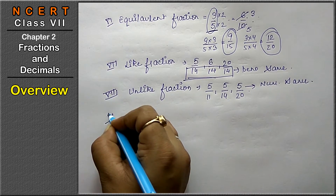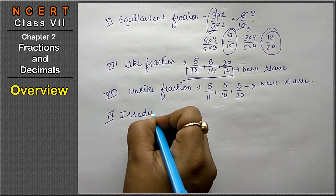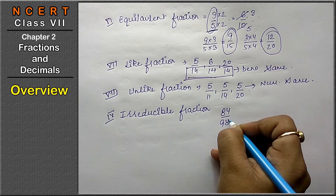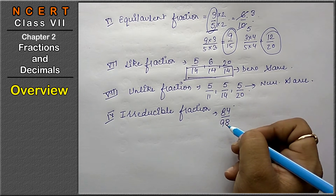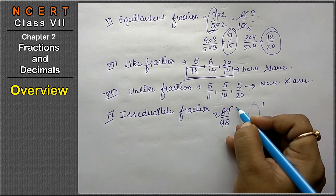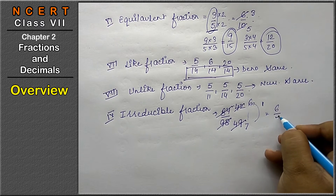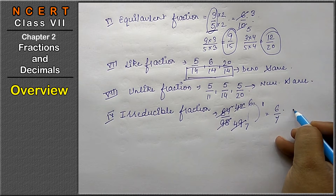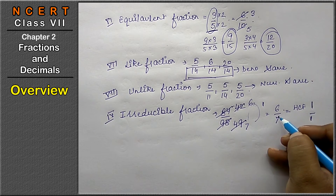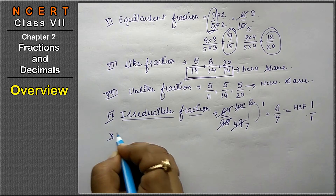The ninth type is the irreducible fraction. For example, 84 upon 98 — an irreducible fraction is one that has been reduced as much as possible so that the HCF of numerator and denominator is 1. Like 84 upon 98 simplifies to 6 upon 7. We cannot reduce it further — there is only one common factor remaining. That is called an irreducible fraction.